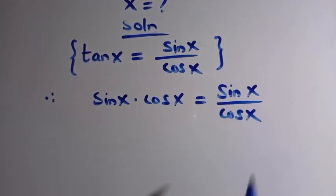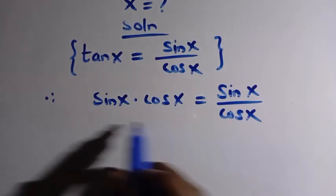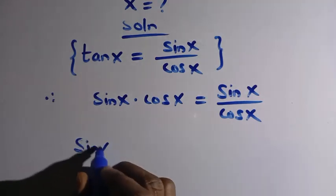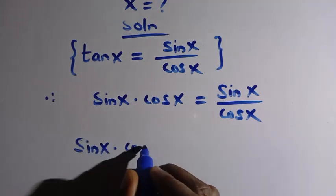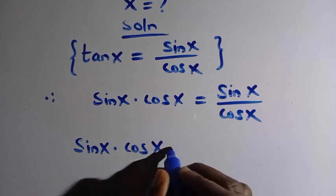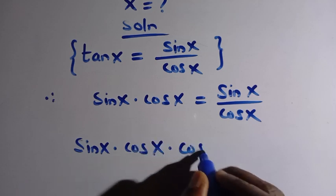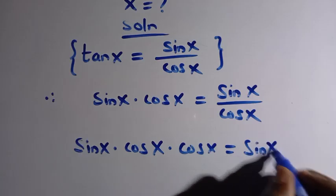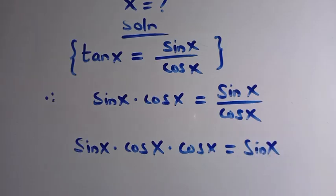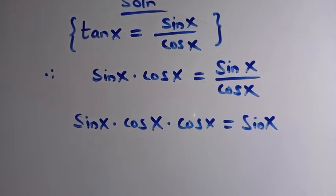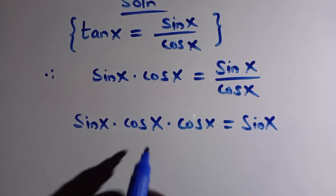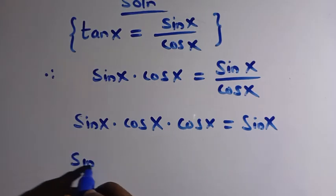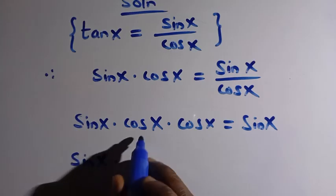Now we cross multiply. On the left side we get sine x multiplied by cos x, multiplied by cos x. On the right side we have sine x. So after multiplying cos x together, the left side becomes sine x multiplied by cos squared x, and the right side equals sine x.